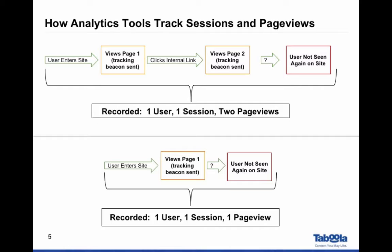Regardless of what happens after that second page view, what will be recorded is one user, one session or visit, and two page views — so that would not be a bounce. In the other example, the user comes into your site, we see the tracking beacon sent out once, and then we have no other information about what that user does. That would be recorded as a bounce. The key takeaway is that every time somebody loads your page or takes a tracked action, a piece of code goes out to Google Analytics, and that's all Google Analytics knows — it doesn't know if something is not marked up specifically with analytics code.